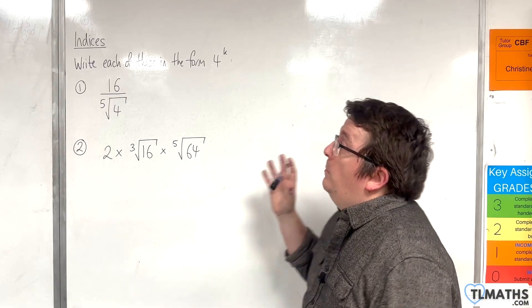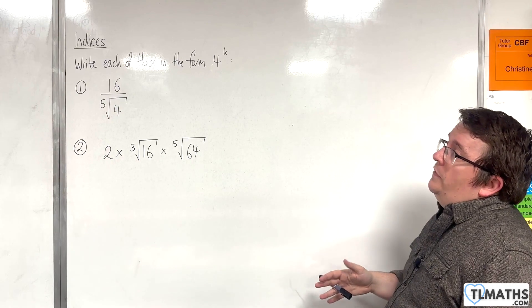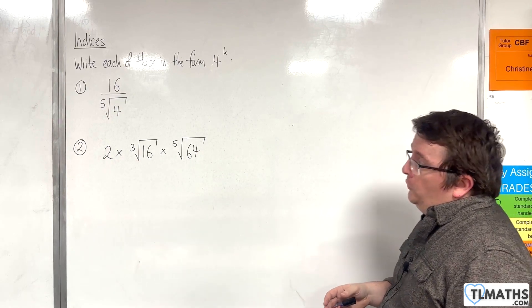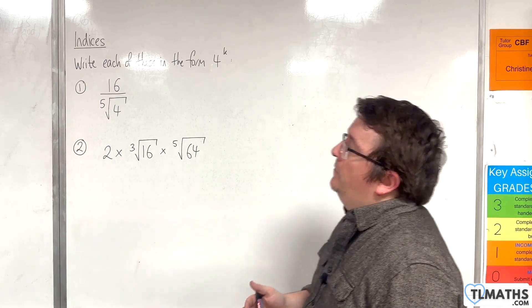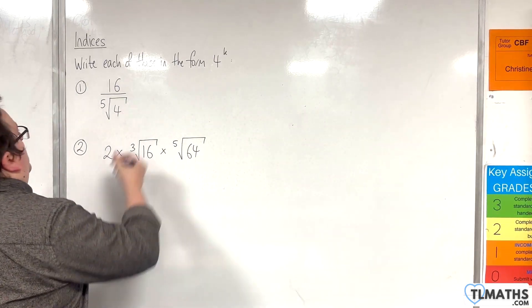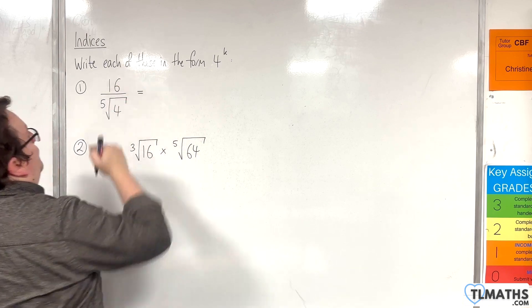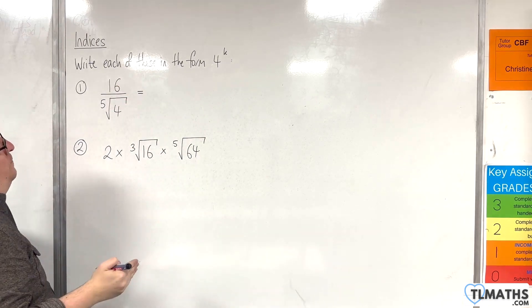In this video, I'm going to go through a couple of examples where we need to write each of these in the form of 4 to the k. So, for the first one, we have 16 over the 5th root of 4.